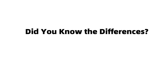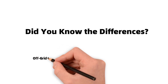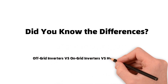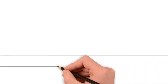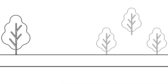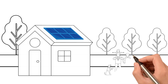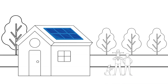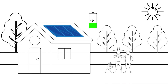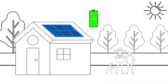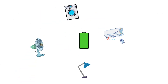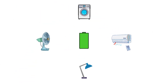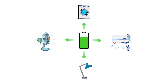Do you know how to distinguish between off-grid inverters, on-grid inverters and hybrid inverters? Inverters are a crucial component of solar power systems, converting the direct current generated by solar panels into alternating current for household appliances. These appliances include various home electrical devices such as lights, fans, washing machines and air conditioners, which typically require AC power.